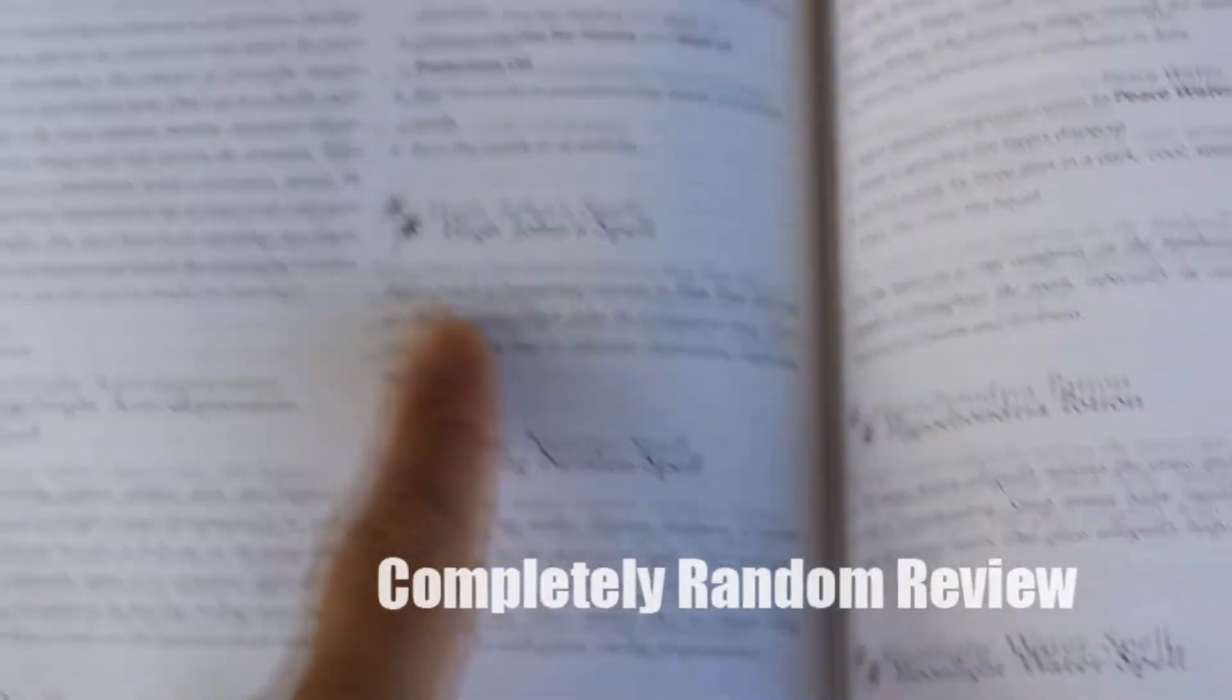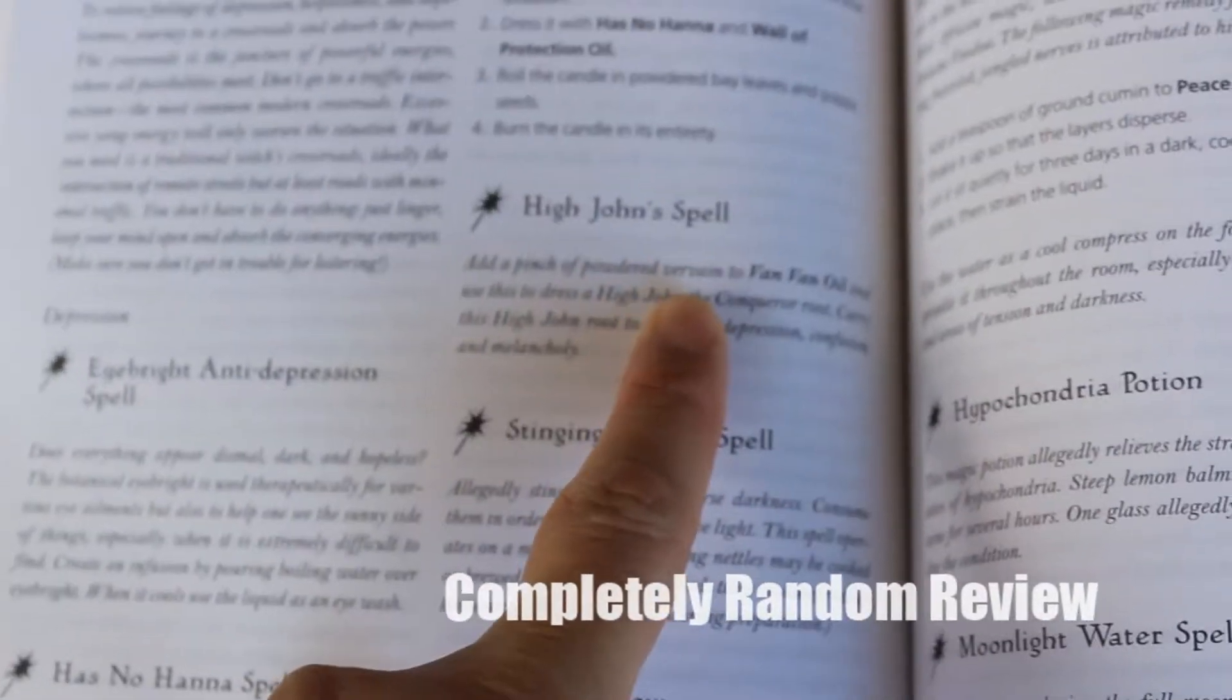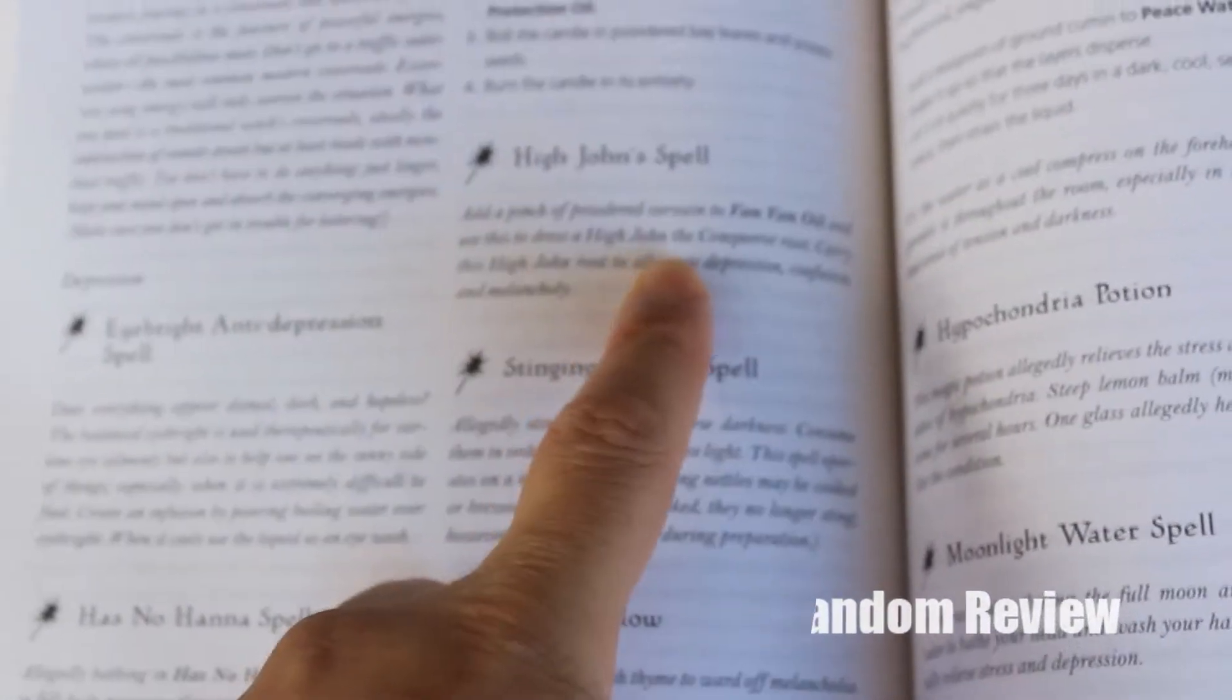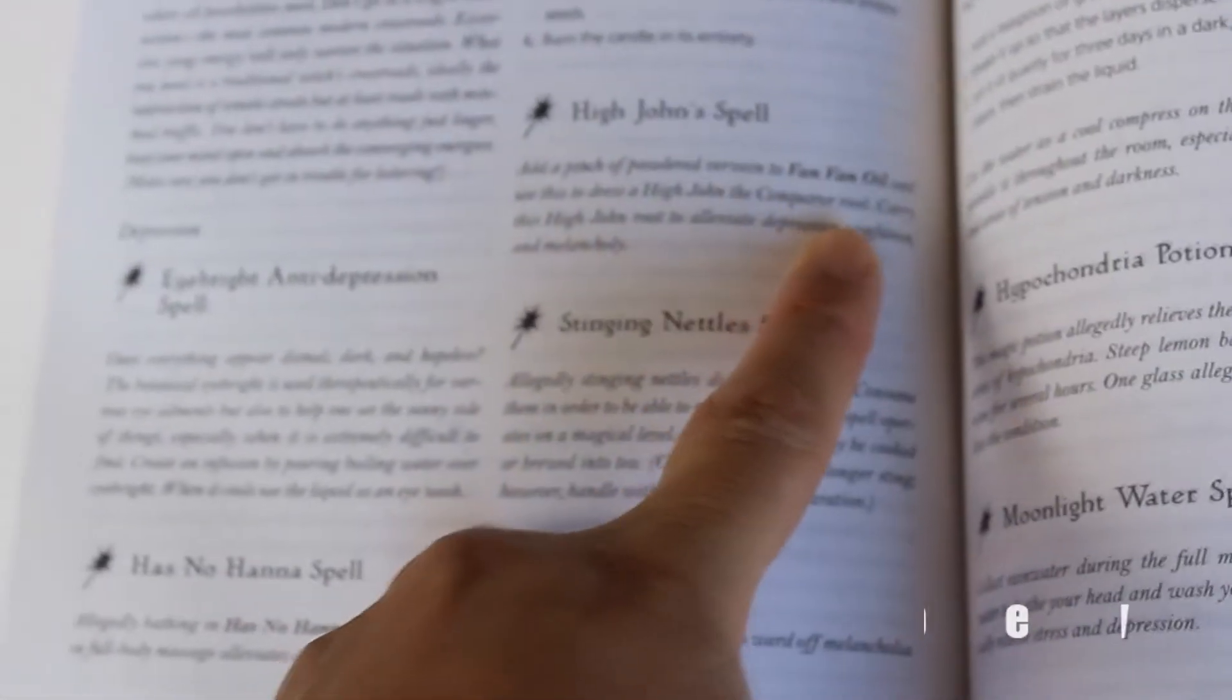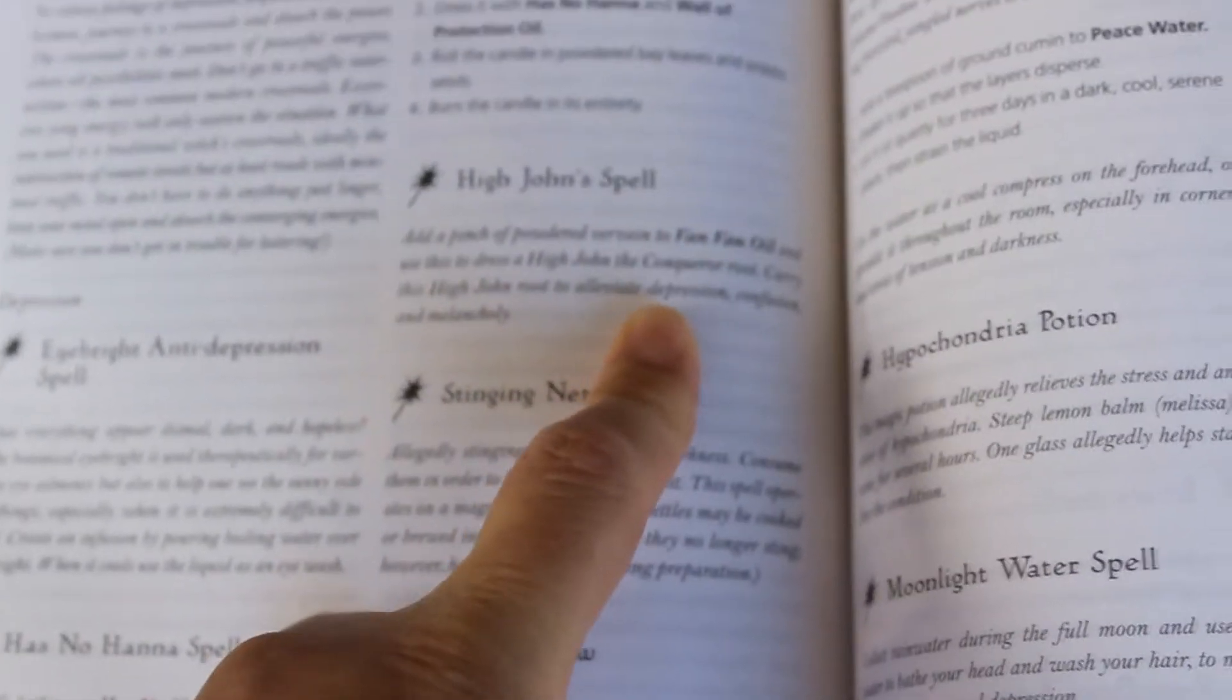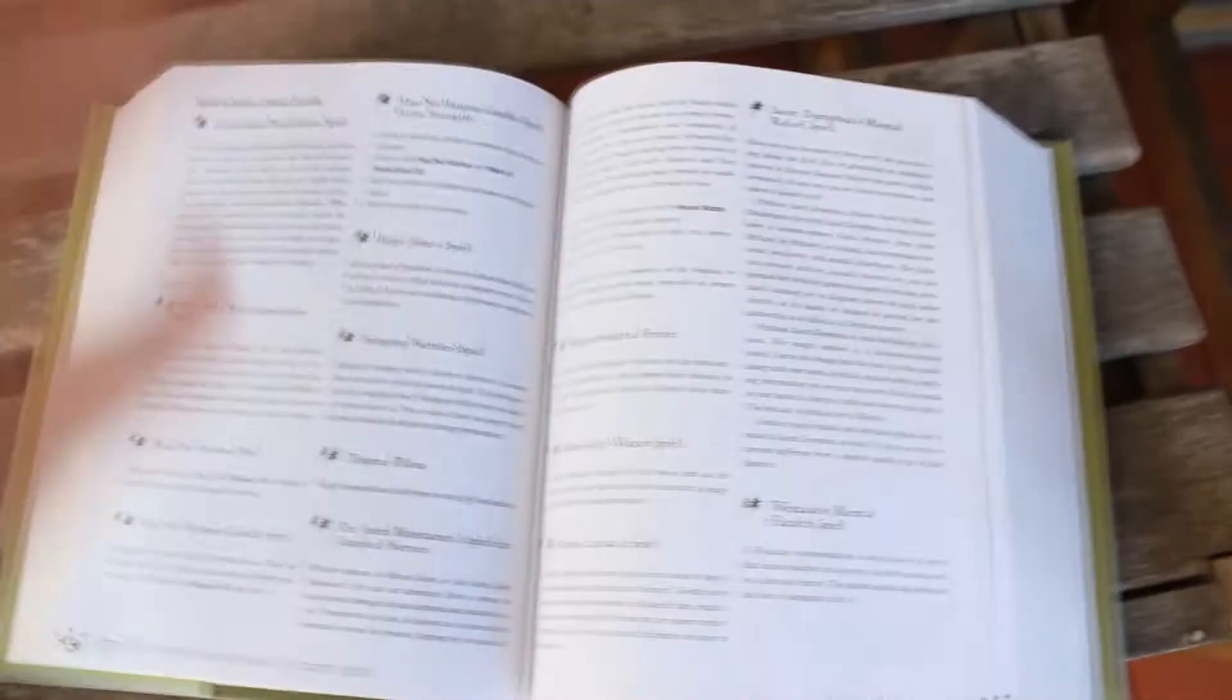Add a pinch of powdered vervain to Van Van oil and use a dresser High John something. Carry High John root to alternative depression confusion. Oh my god. What the hell is all this stuff?